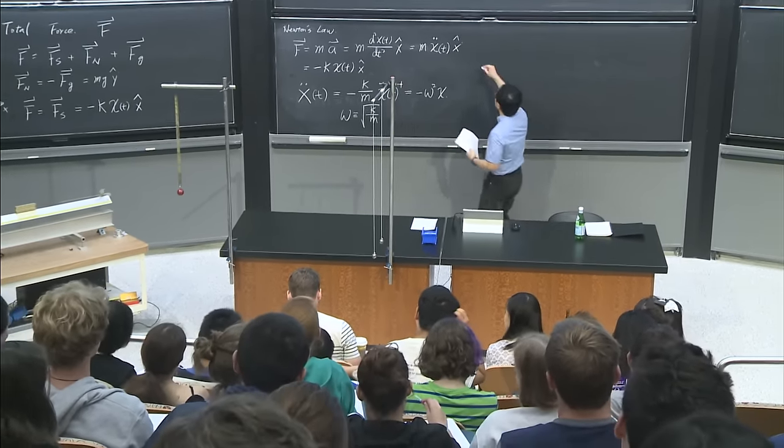If you look at this system, it follows harmonic oscillation. If I perturb it, it goes back and forth. It's almost everywhere. Why is this the case? I'm going to answer this question immediately.